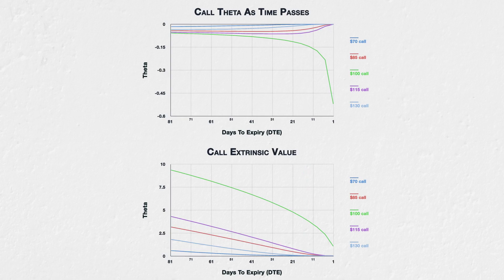Finally, moving on to the at-the-money $100 call, this behaves very differently. Instead of getting smaller, the effect of theta increases over time — steadily at first, then much more rapidly as we come into expiry. This means the extrinsic value of the at-the-money option is lost at an ever-increasing rate, getting much faster as we come into expiry, with the line getting ever steeper.